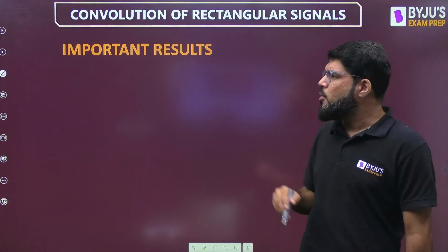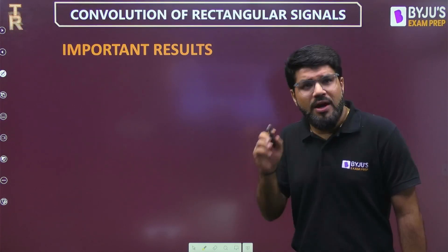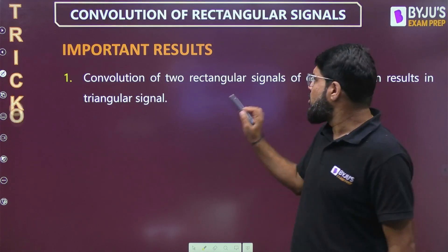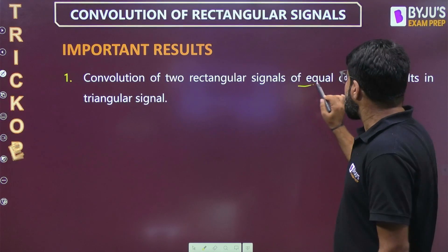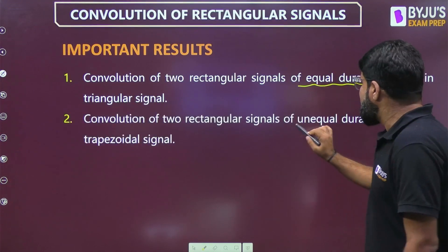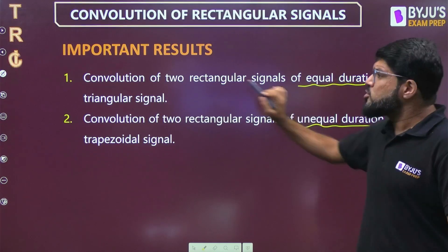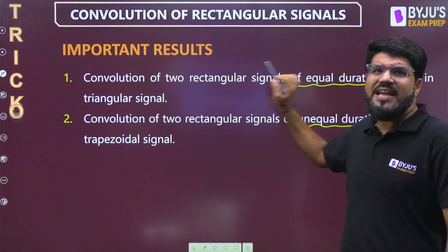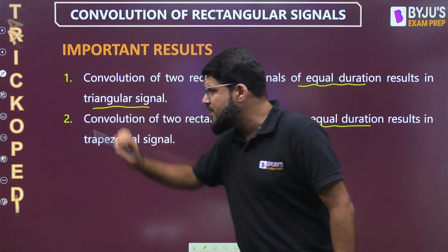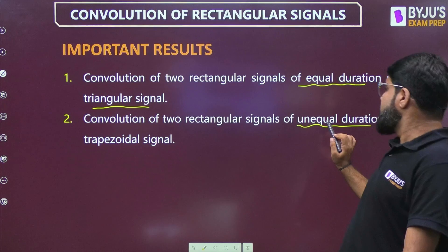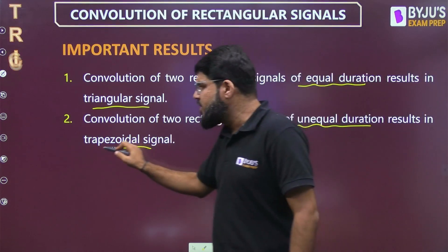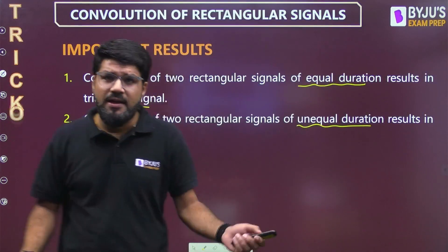There are two important results to keep in mind. When you convolve two rectangles of equal duration, you get a triangular signal. When you convolve rectangles of unequal duration, the result will be a trapezoidal signal.